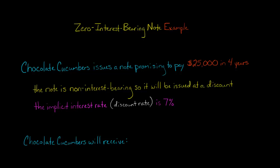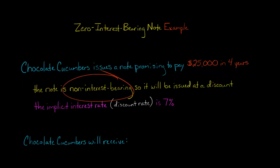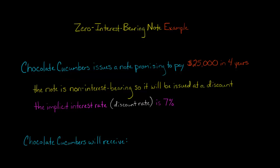Let's walk through an example of a zero interest bearing note. The company Chocolate Cucumbers issues a note promising to pay $25,000 four years from today. The note is going to be non-interest bearing, meaning Chocolate Cucumbers is not going to have to make interest payments throughout the life of the note. Instead, the note will be issued at a discount.